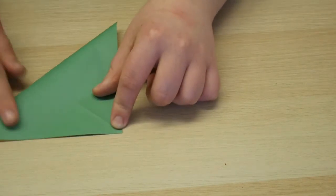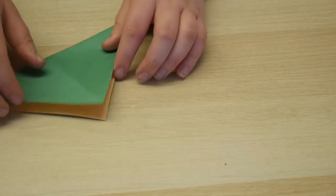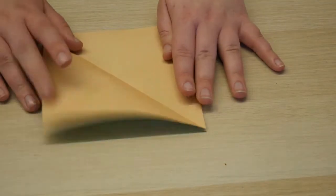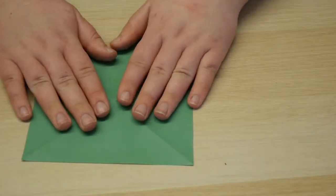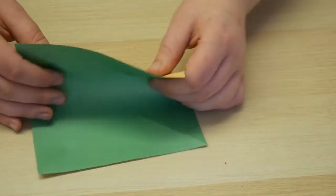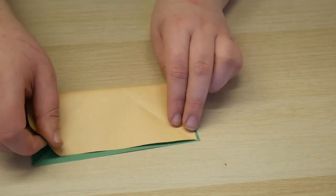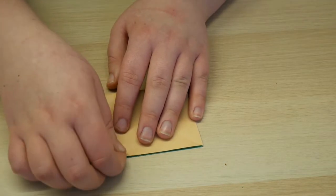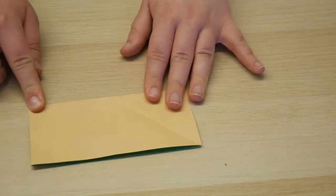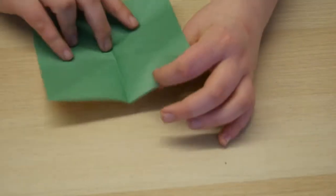So we just fold it over, make a crease, open it up again, fold it over, make a crease and open it up again just like that. Turn it over and in the opposite direction we're going to just fold it lengthways.